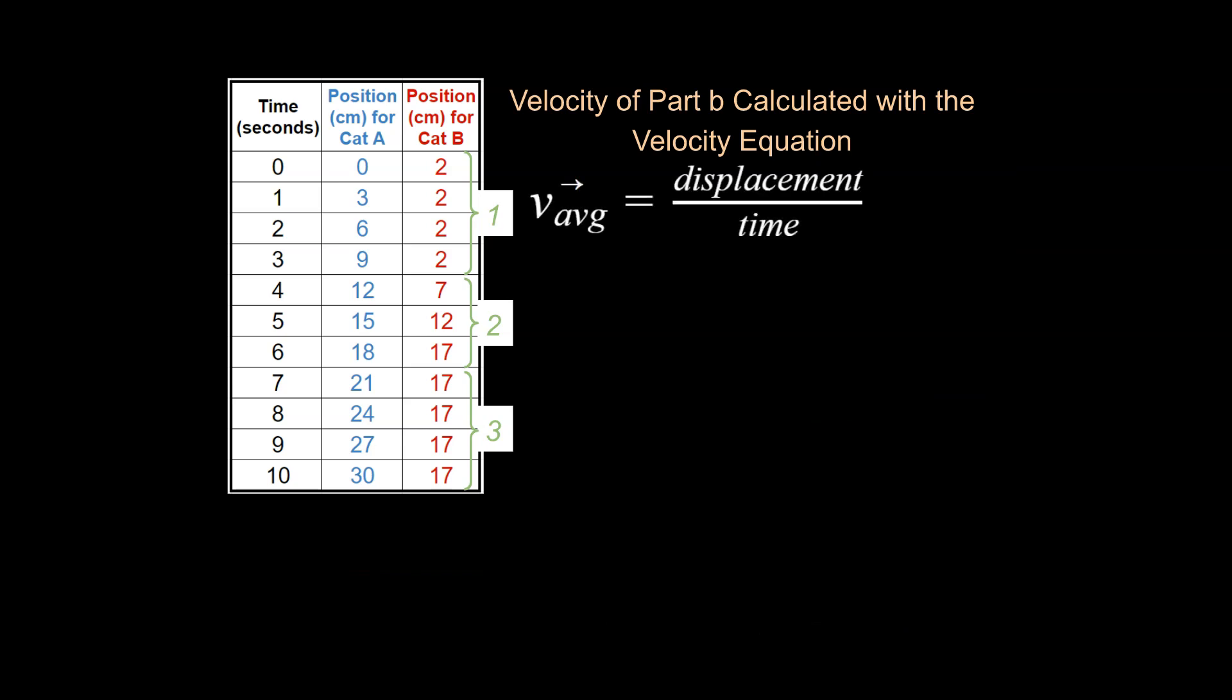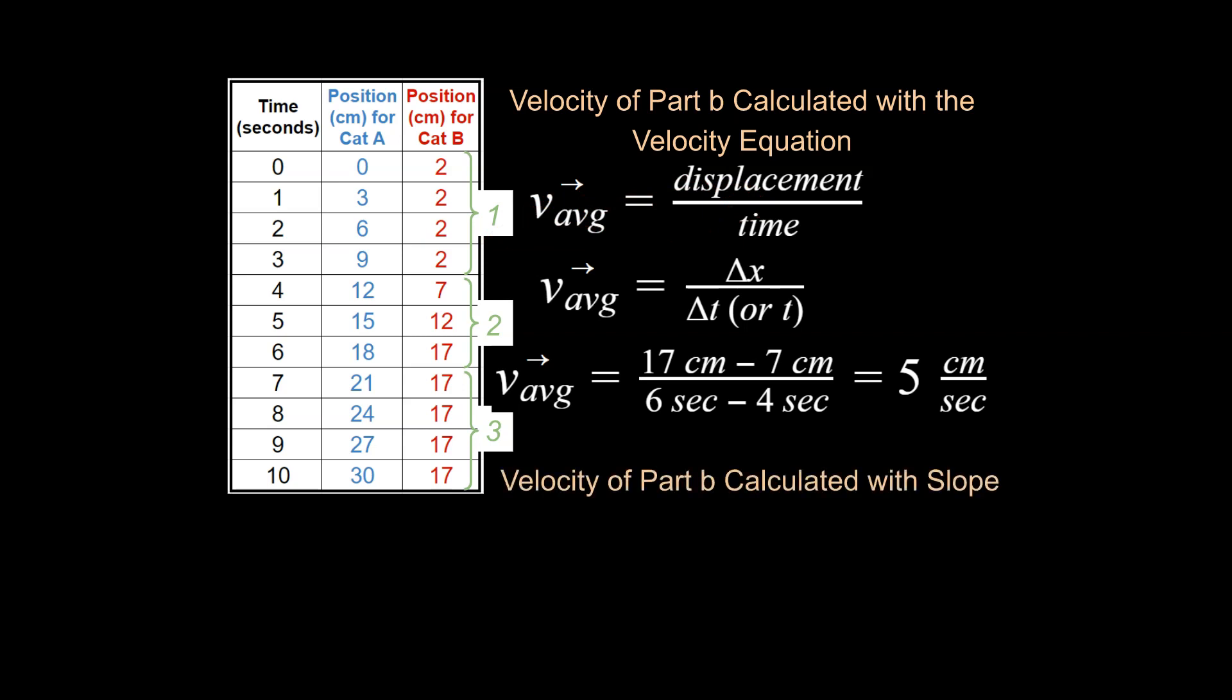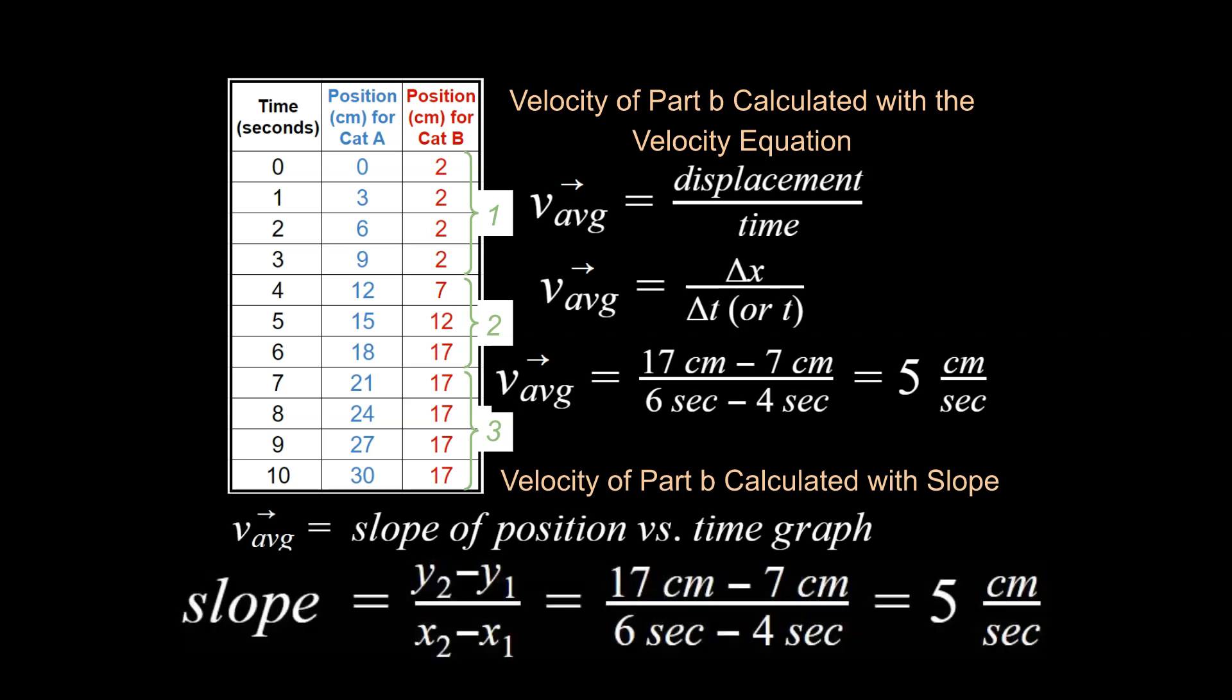If we calculate using the velocity equation here, like we have talked about previously in a previous lesson I've done, if you take a look over here, you've got your delta x over delta t, or sometimes you would just write t, and that value is going to be 17 minus 7 centimeters over 6 minus 4 seconds. That's going to be 5 centimeters per second if you just use this equation right here to calculate this value. Well, what if we did this using the slope equation using two points? Well, if we did that, you would still have the same answer either way. You get the same answer conceptually, and you get the same answer mathematically either way you look at this.